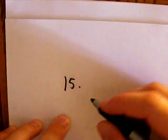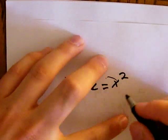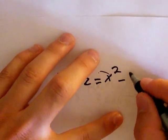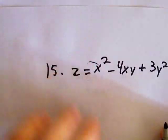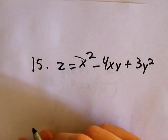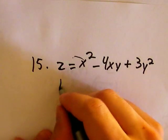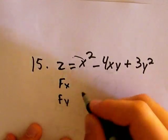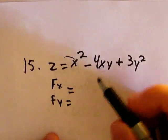Alright, and then I guess we can run through another really quick one here. And this one we have another z term. It's going to be x squared minus 4xy plus 3y squared. So, here we have everything in terms of two variables again, x and y.